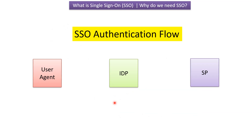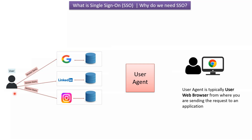In the SSO authentication flow, there are three important actors. The first one is the user agent, the second one is the IdP — which stands for Identity Provider — and the third one is the SP — which stands for Service Provider. The user agent is typically a web browser from which you send requests to an application.